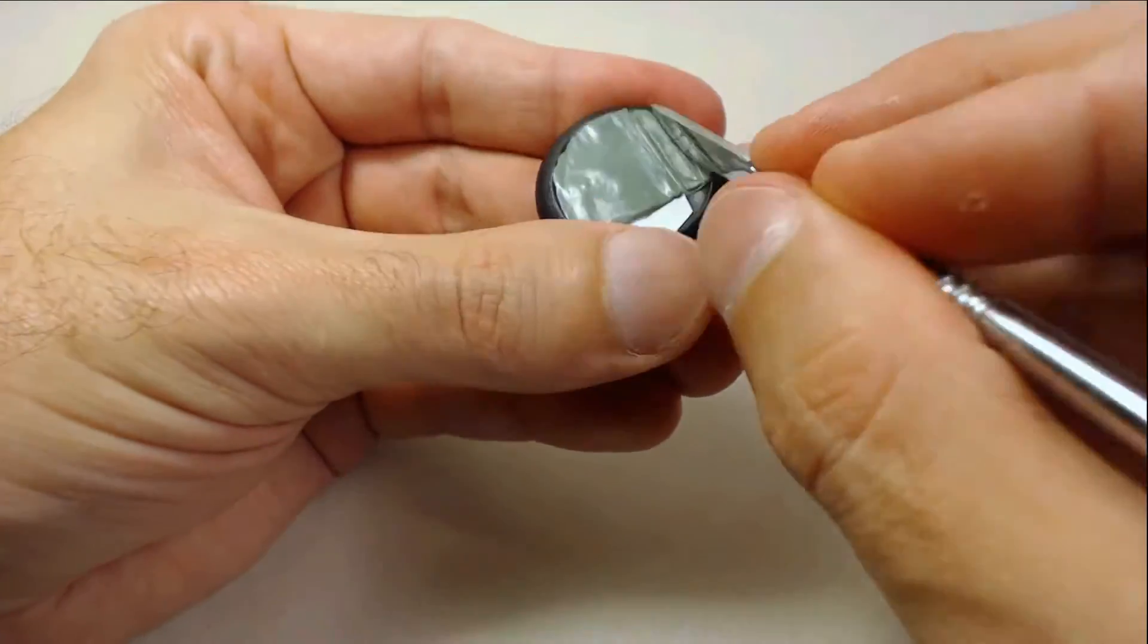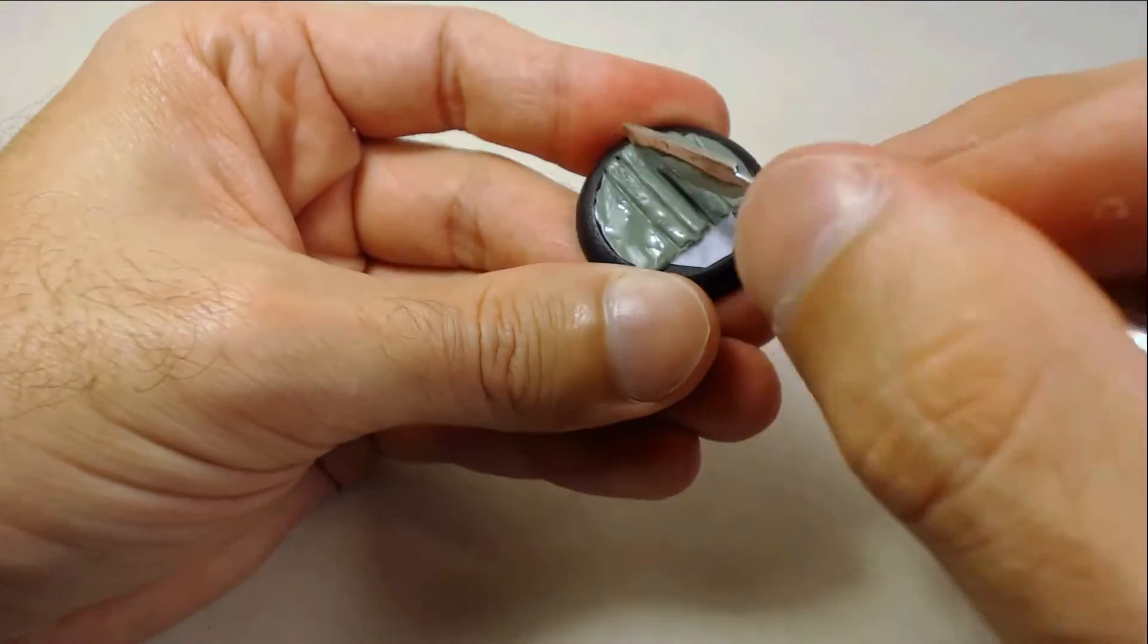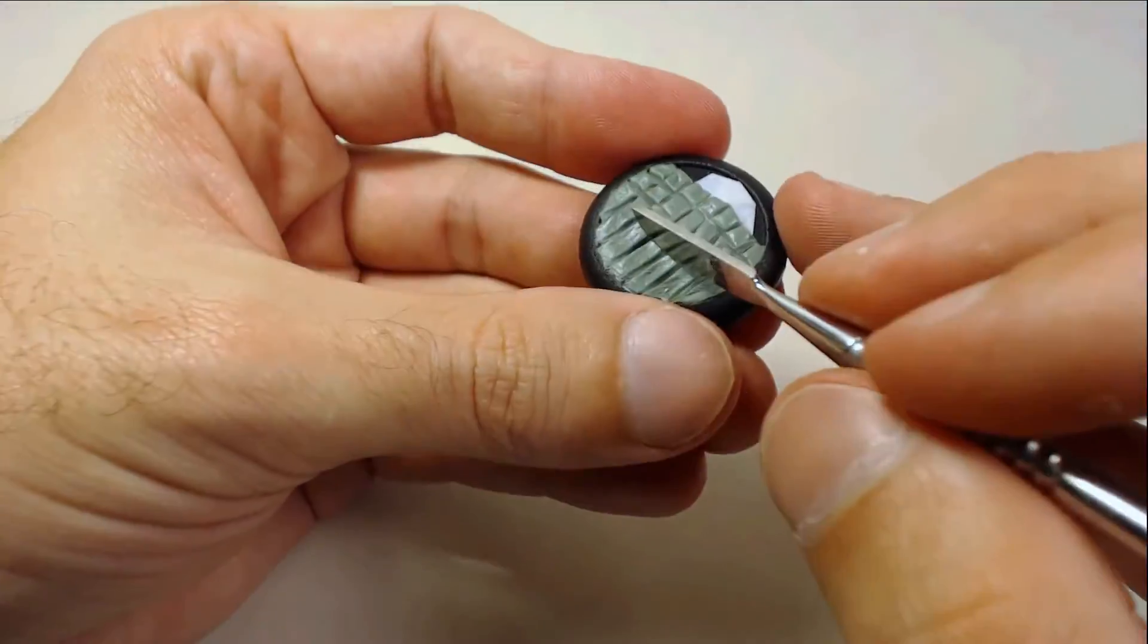As for the tile texture, it's a straightforward grid carved similarly to the cobblestone. You'll want to make sure that the lines are as parallel as possible.